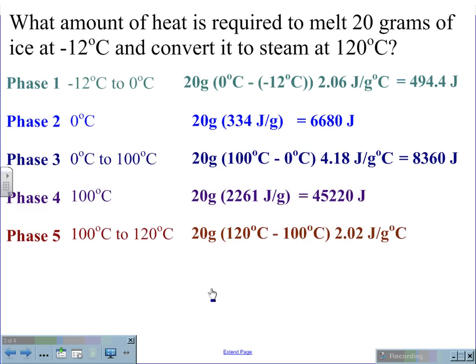And in the last phase, 20 grams times 120 minus 100 times 2.02 joules per grams gives us a heat value of 1,010 joules. We add up all 5 of these phases and get a total joule heat change of 61,764.4 joules.